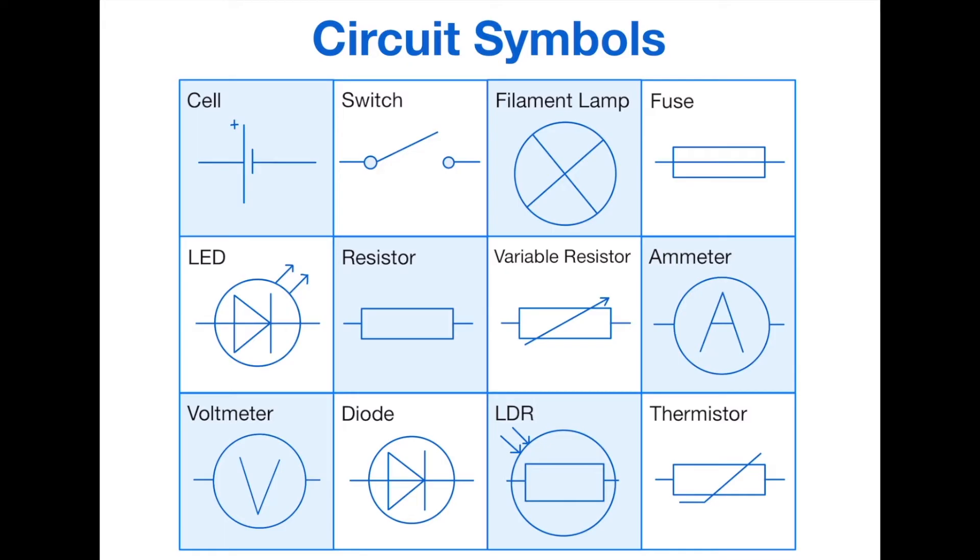LED, light emitting diode. Resistor. Variable resistor, which is just a resistor with an arrow through it. Ammeter with a big A. Voltmeter with a big V. Diode, which is very similar to the light emitting diode. The light dependent resistor, and then the thermistor.